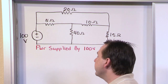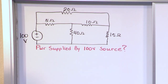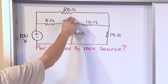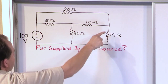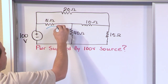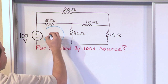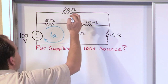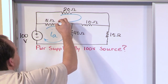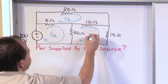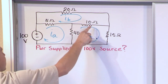We're going to use mesh currents, so the first thing we need to do is identify where our meshes are. Think of the circuit as a cookie cutter — a mesh will be here, a mesh will be this whole rectangular region at the top, and a mesh will be this whole rectangular region on the side. I always go clockwise, so I label them I sub A, I sub B, and I sub C.